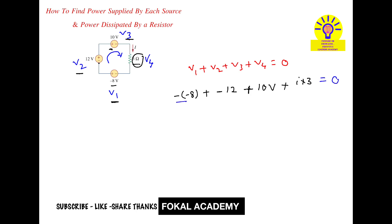So minus 8 minus 12 plus 10 plus 3I equals zero. 10 plus 8 is 18, 18 minus 12 is 6, so 6 plus 3I equals zero. From this, 3I equals minus 6, so I equals minus 2 amperes. This is the current in the given circuit.